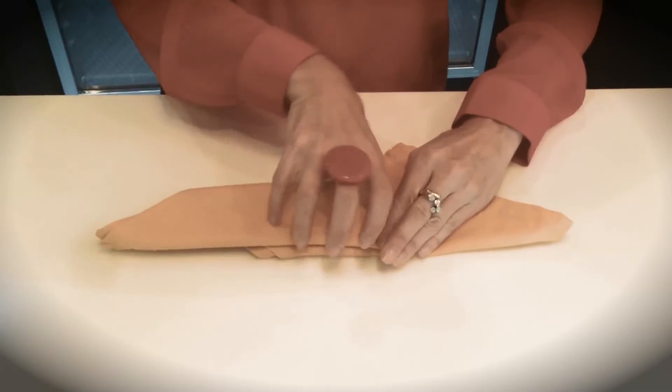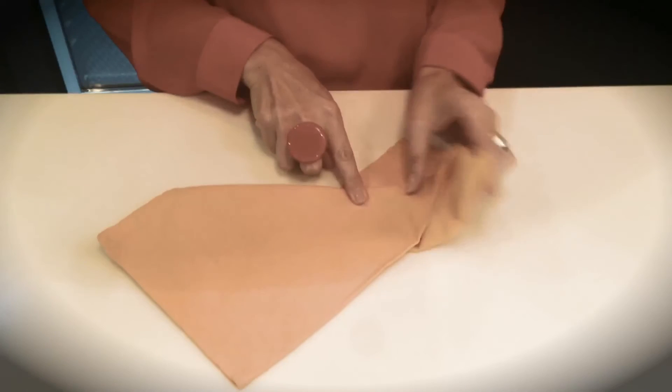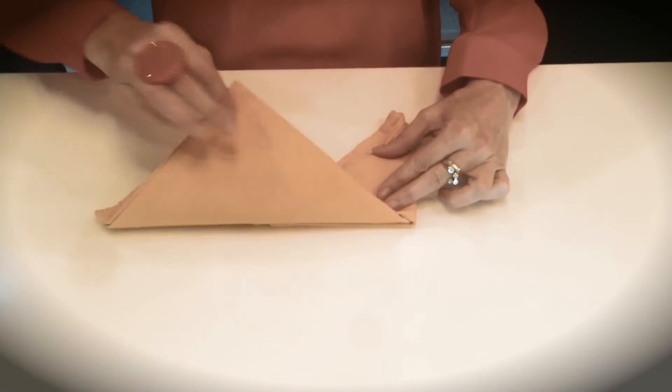You're now going to fold the bottom to the top. From here, you want to flip open your triangle. Then you're going to fold this triangle into the middle.